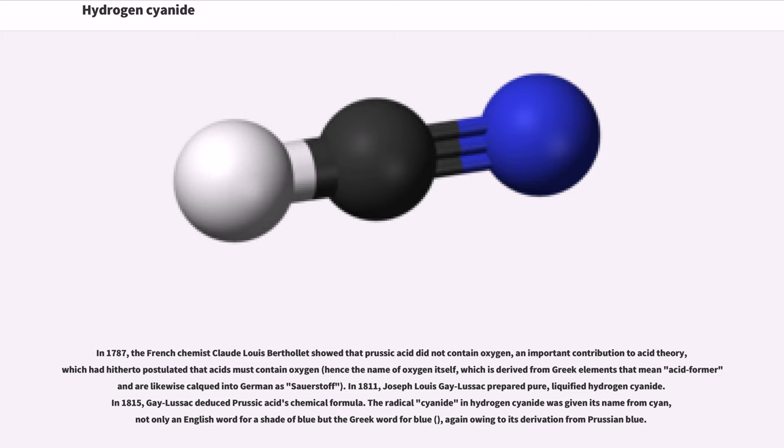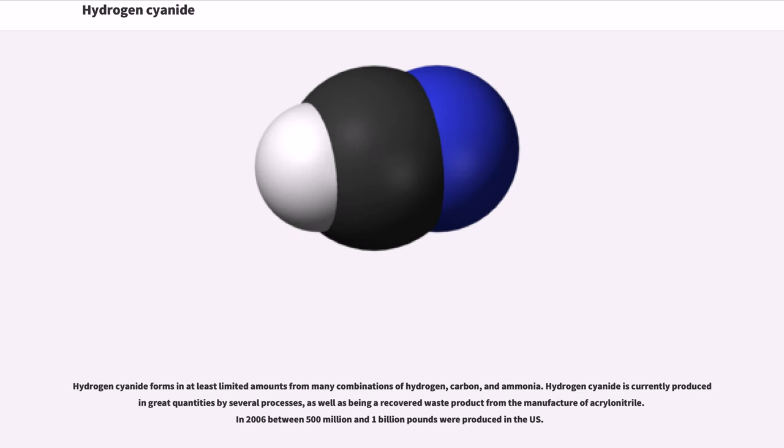Hydrogen cyanide forms in at least limited amounts from many combinations of hydrogen, carbon, and ammonia. Hydrogen cyanide is currently produced in great quantities by several processes as well as being a recovered waste product from the manufacture of acrylonitrile. In 2006, between 500 million and 1 billion pounds were produced in the U.S.